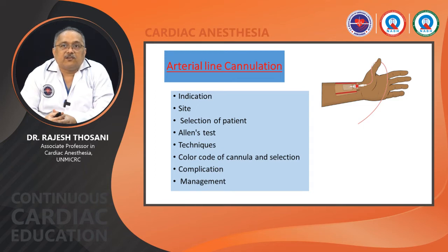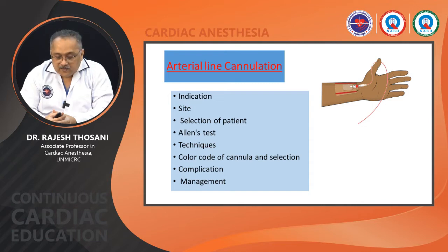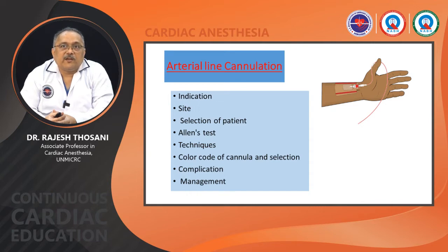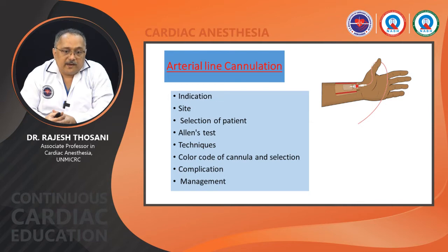Next is arterial line cannulation, which is very important in cardiac institutes, major surgeries, and major hospitals where continuous arterial monitoring is essential. The indications, site selection, and Allen's test to check patency of radial and ulnar collateral circulation are key. After a negative Allen's test, radial artery cannulation is performed. Direct needle puncture technique is most commonly used; the Seldinger technique is useful in difficult cases. Color-coded cannulas are available.